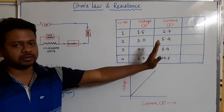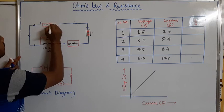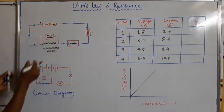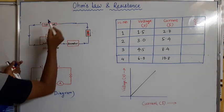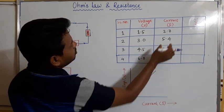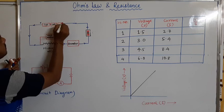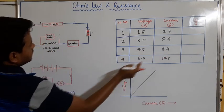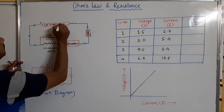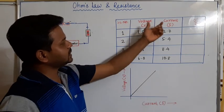Next we will take two cells and do the same experiment. When two cells are there, the voltage becomes 1.5 + 1.5 = 3 volts and the ammeter also shows a different reading — that reading is 5.4. Similarly you have to find out the reading for three cells, then four cells, and tabulate the voltage and current readings for each case.